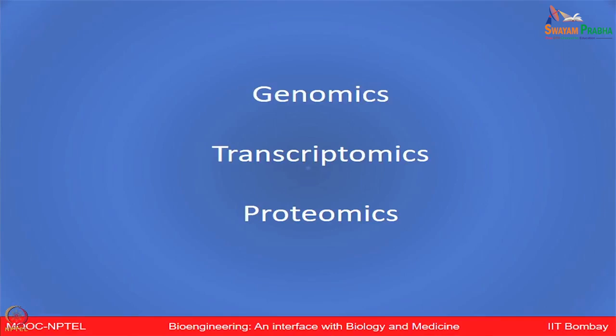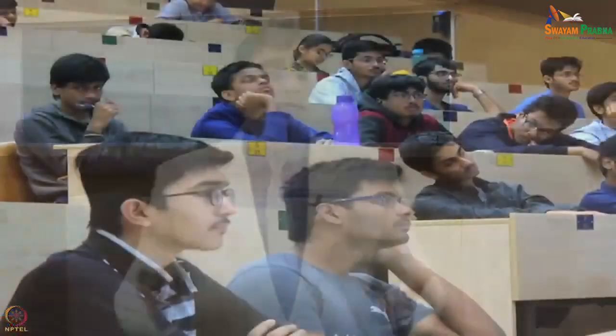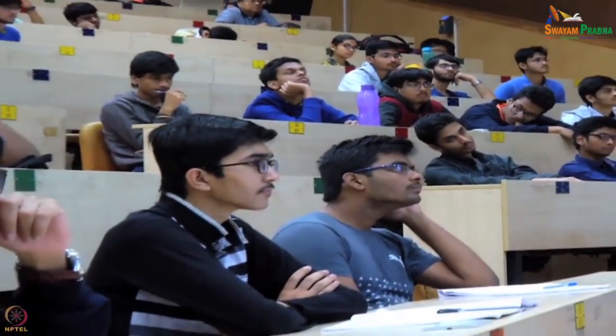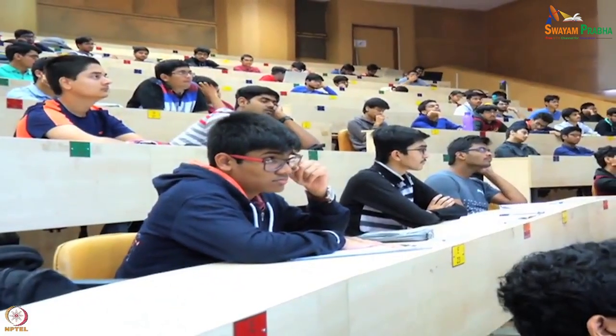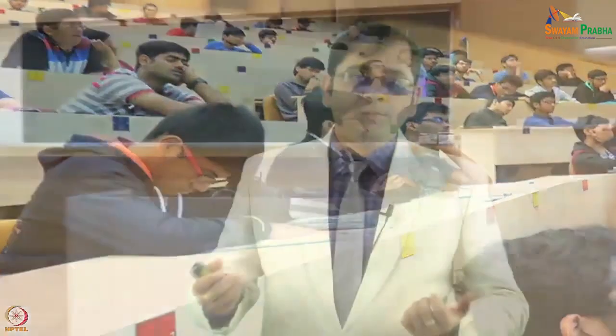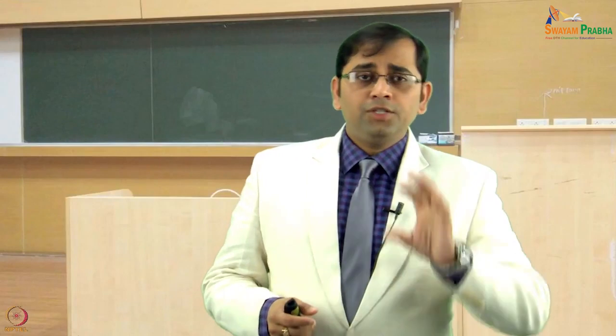While we have around 20,000 genes, the transcript number could be even 100,000. The proteome number could be even 1,000,000. We literally have no idea exactly how many proteins are present, because even after protein synthesis, many modifications happen which are known as post-translational modifications. So while the genome provides a static snapshot of total information encoded in a cell, the biological processes are very dynamic and complex, and probably better explained by transcriptomics as well as proteomics.